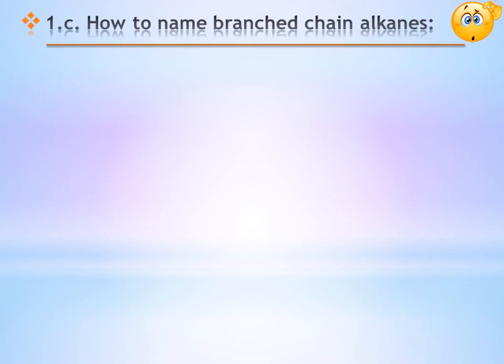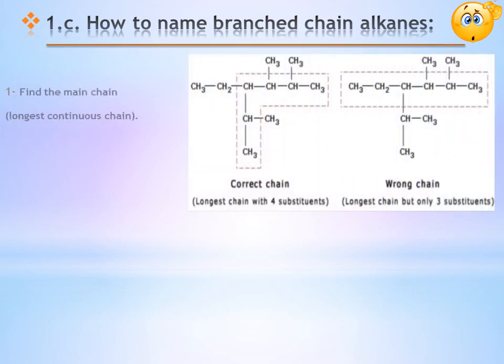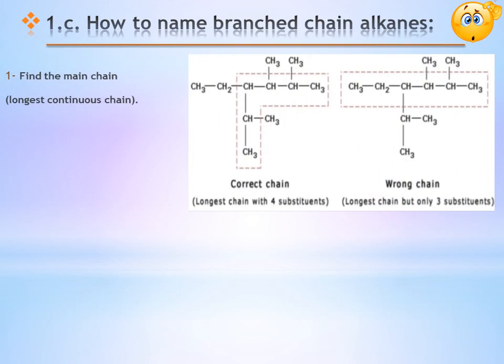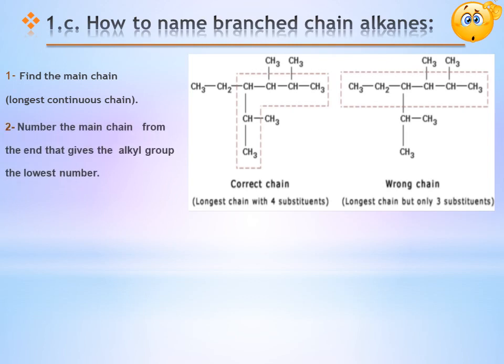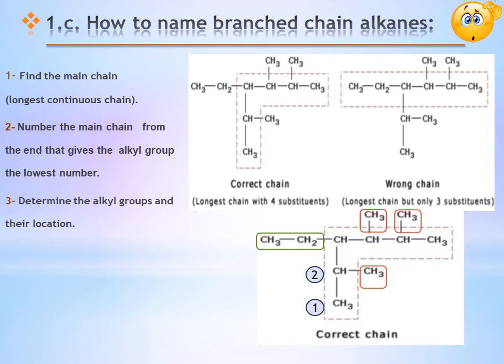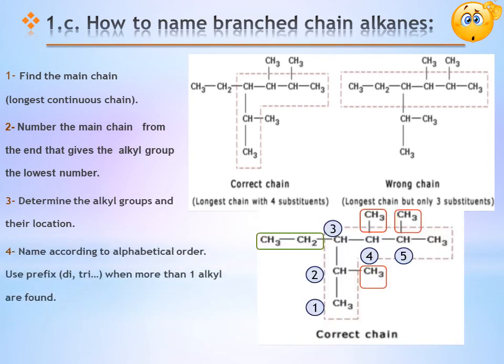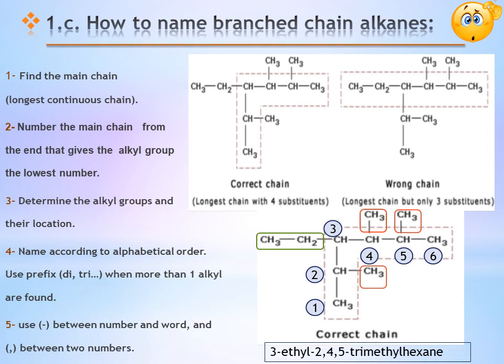How do we name a branched alkane using IUPAC names? First, find the longest chain and choose the correct chain. Then number from the side nearest to the branch to get the lowest numbers. Determine the alkyl groups and their positions. Then write the name using numbers, and if there is more than one alkyl group of the same kind, you put di, tri, etc., as you see in this example.